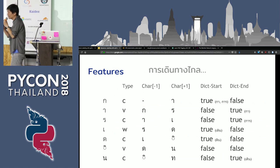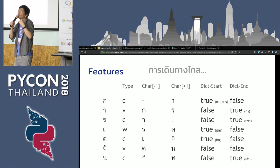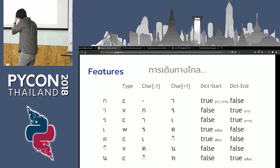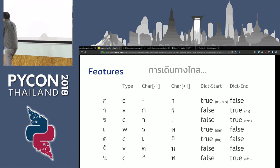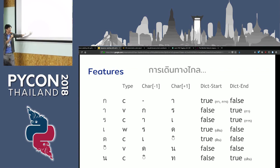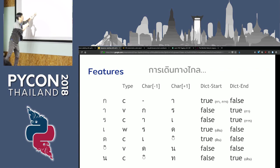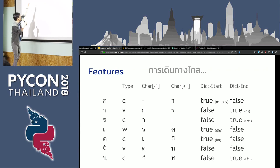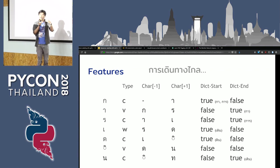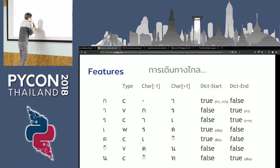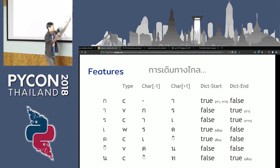The second thing you have to think about is the features — what kind of features you're going to give the machine to look for. In this case, with some Thai linguistics domain knowledge, you can say this character type is a consonant, for example. You can put features like: what is the previous character, what is the next character, and according to the dictionary, is it possible for this character to begin a word?